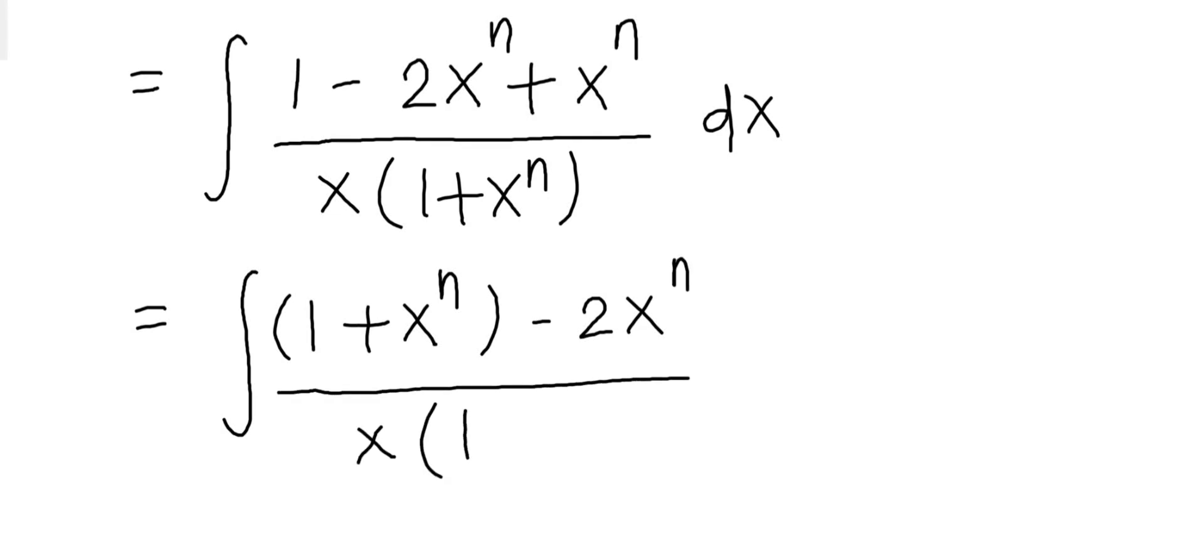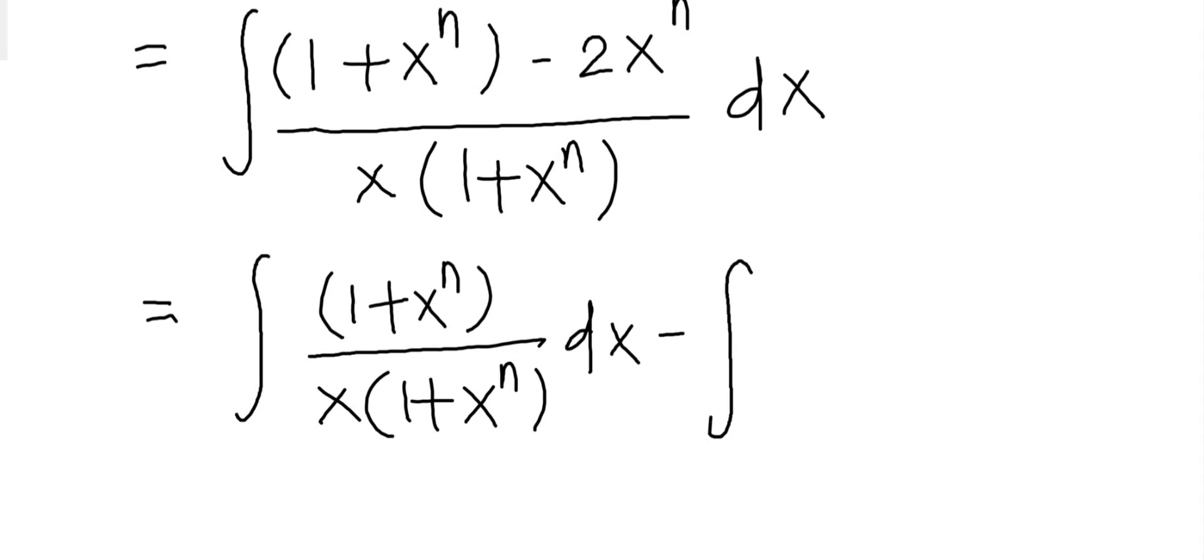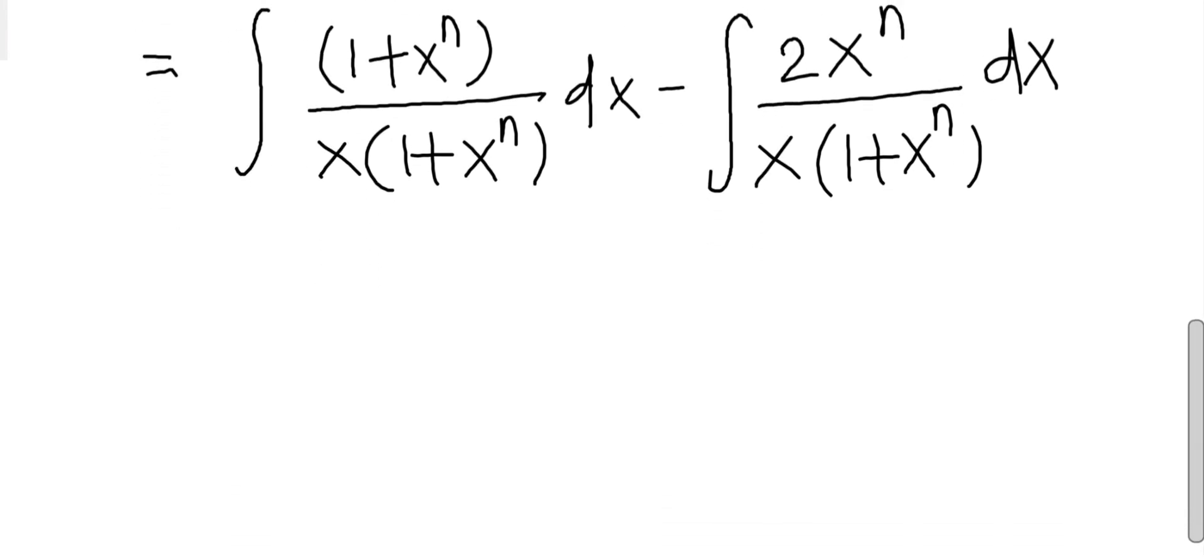Let's separate using the denominator. This gives us (1 + x^n) / (x(1 + x^n)) dx. Now the numerator and denominator cancel, leaving us with 1/x dx.